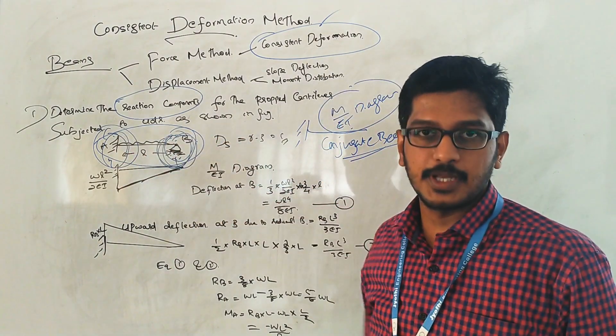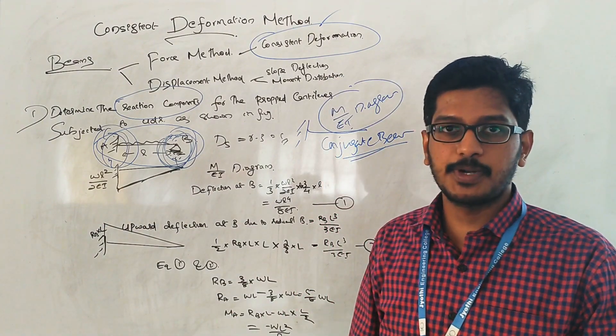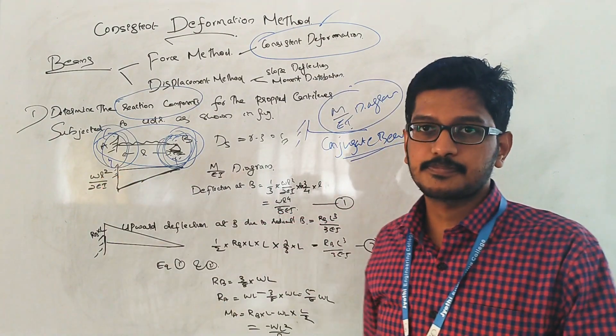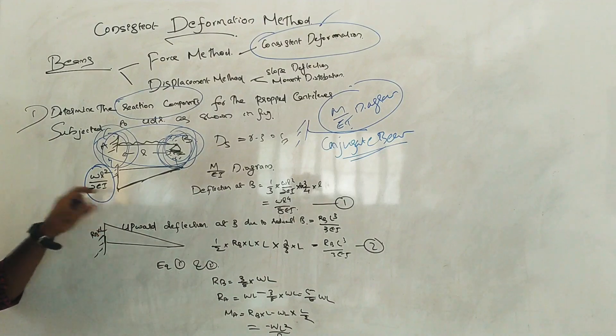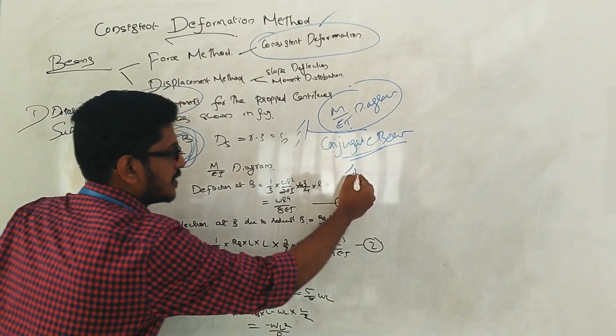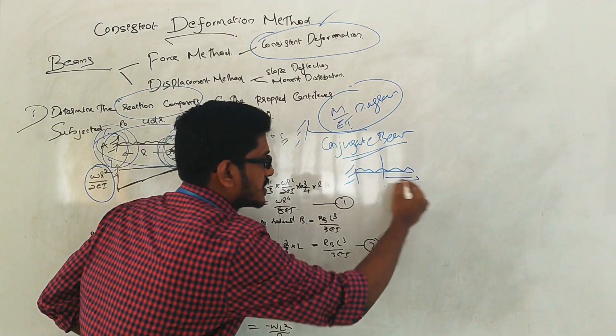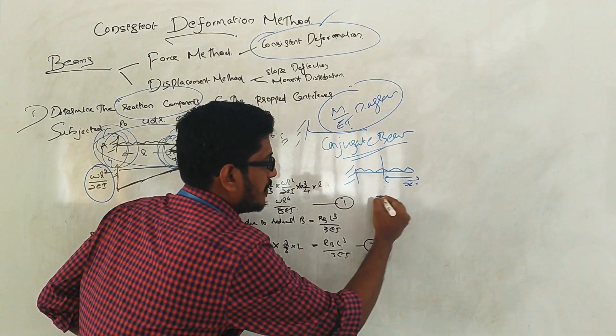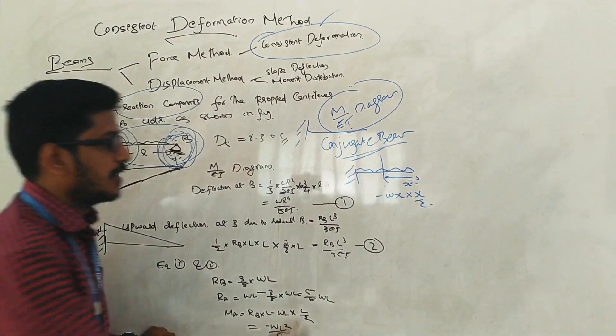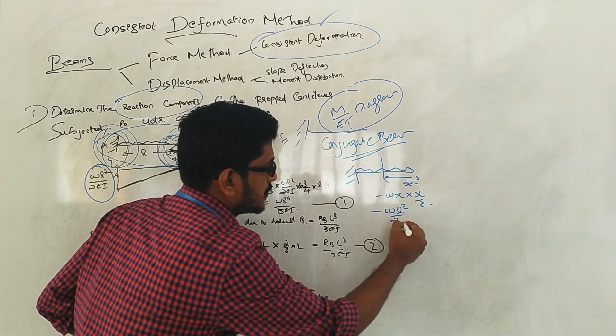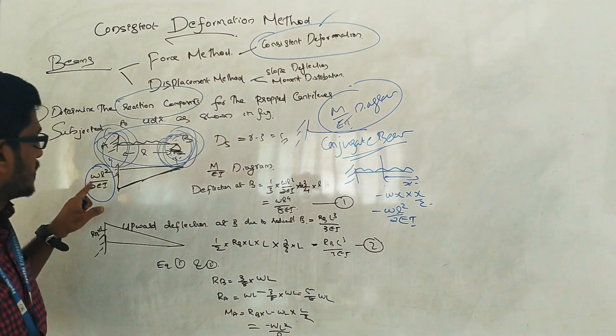We removed the beam portion, so we get a cantilever beam with a UDL. Take a section here. The bending moment is minus w into x into x by 2. When x becomes l, it is minus w l squared by 2. If you consider M by EI diagram, it will become w l squared by 2EI. The graph will be a parabolic shape.